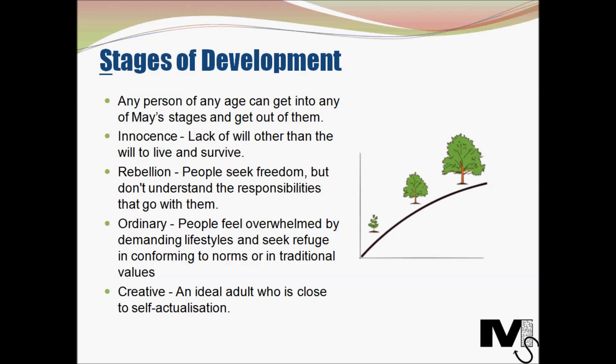The first stage is Innocence. This is a stage — or state of mind — which signifies a lack of will or intention other than the will to survive and to live. The essence of this stage called innocence is the will to live and survive. Infants, for instance, live in this stage wherein they only need to do what's necessary to survive. The same would be the case with an animal who kills other animals for food.